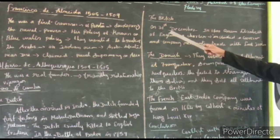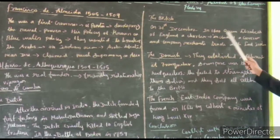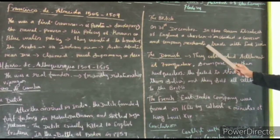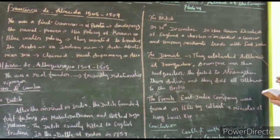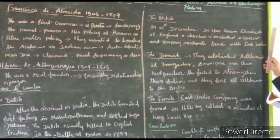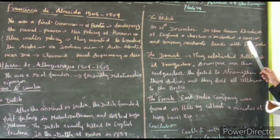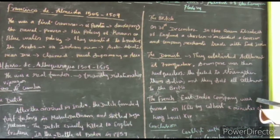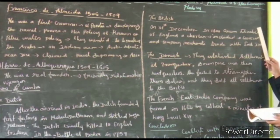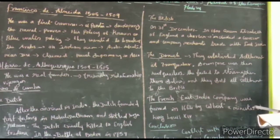Next is the British. On 31 December 1600, Queen Elizabeth of England issued a charter which included a governor and many merchants who would trade with East India. The Mughal Emperor Jahangir permitted the English to establish a factory at Surat in 1613. Then, through a commercial treaty with the Emperor, they occupied the areas of Agra, Bombay, Broach, and Ahmedabad. The British also occupied important places like Calcutta.